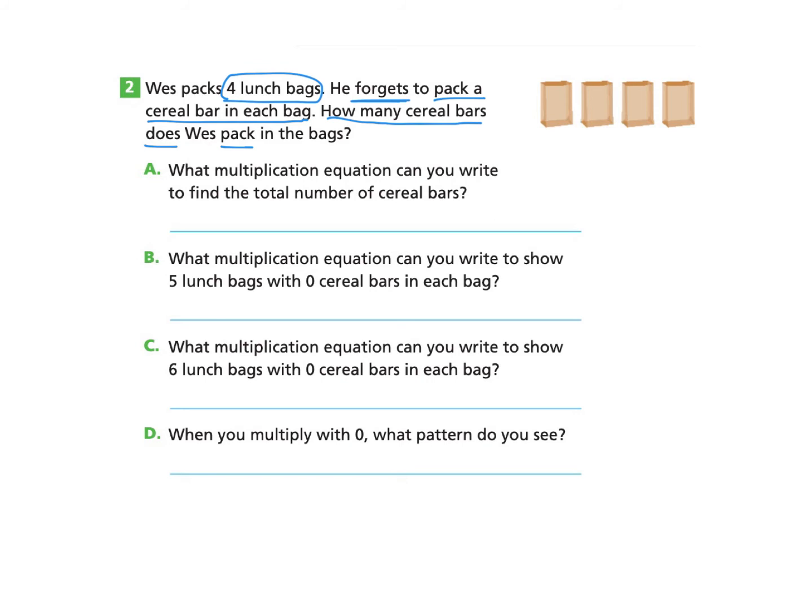Part A says, what multiplication equation can you write to find the total number of cereal bars? If you'd like to pause here and try it on your own, you're welcome to. There are 4 bags. And in each of the bags, there were 0 cereal bars. So our multiplication equation is 4 times 0, which gives us the total amount of cereal bars of 0.